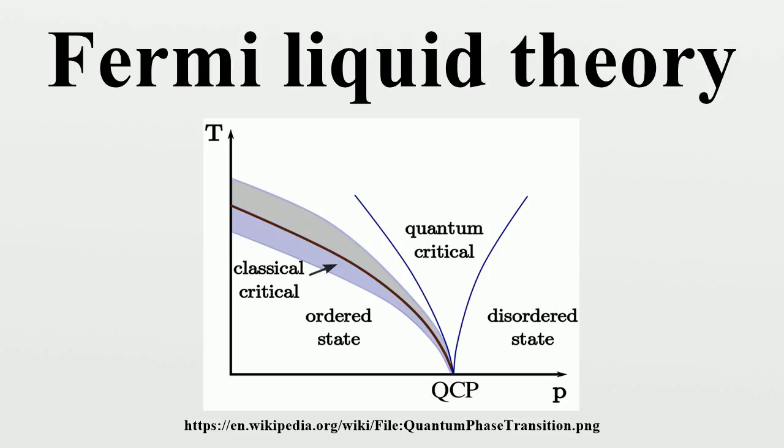That is, on approaching the critical point, it is observed that the quasi-particle residue Z approaches zero. On the other hand, specific quantum critical points represented by fermion condensation quantum phase transition support quasi-particles with finite quasi-particle residue. This phase transition does preserve the Pomeranchuk stability conditions and proffers a new way to violate the stability of Fermi liquid. These unique properties of the phase transition allow one to explain both the scaling and the non-Fermi liquid behavior observed in heavy fermion compounds.